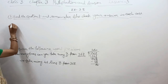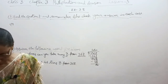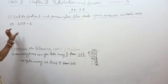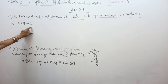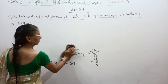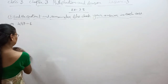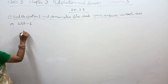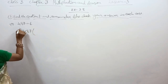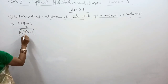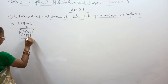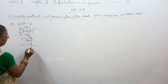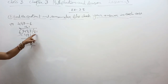The first question is 487 divided by 6. First, 6 into 48 — 6 eights are 48, minus gives 0. Carry down 7. 6 into 7 — 6 ones are 6, minus 7 minus 6 gives 1. So the quotient is 81 and the remainder is 1.